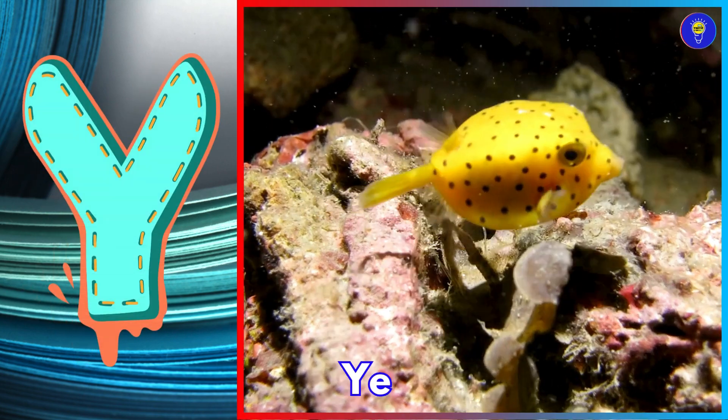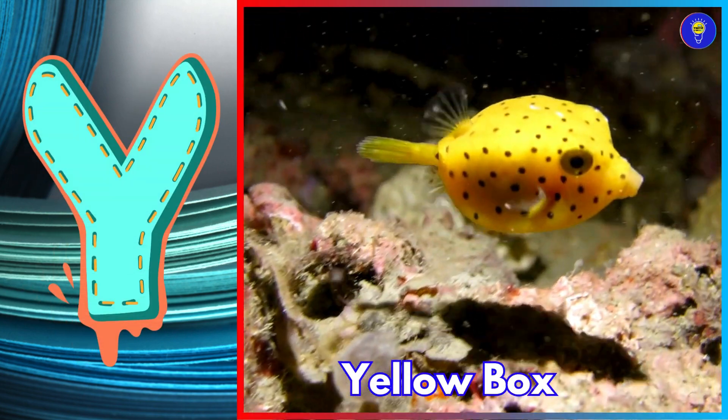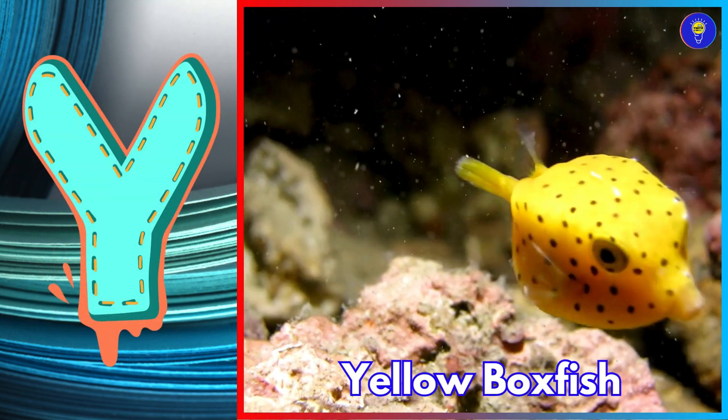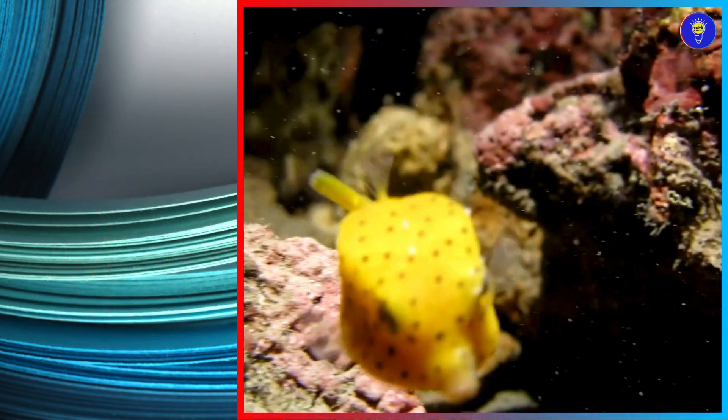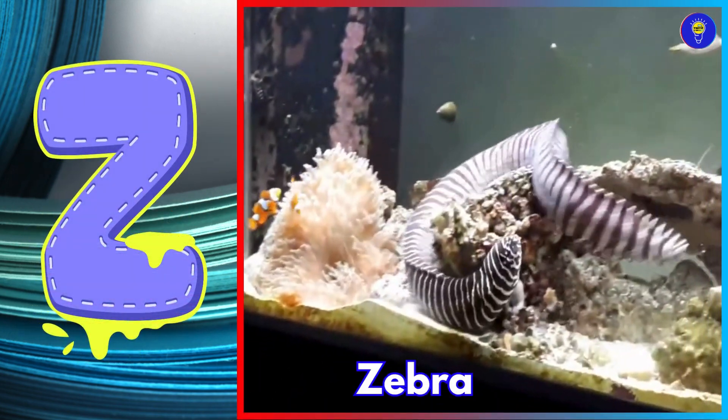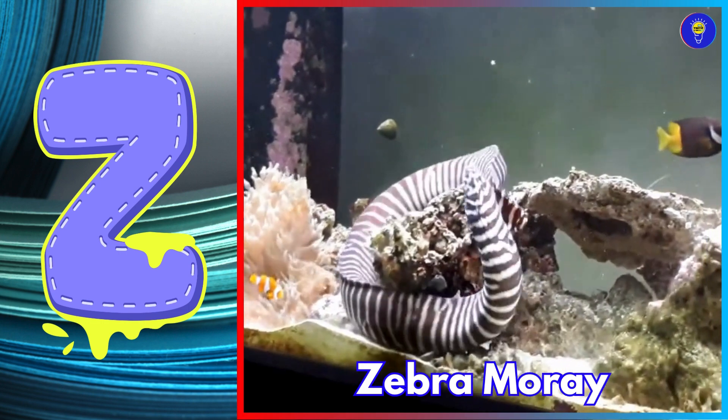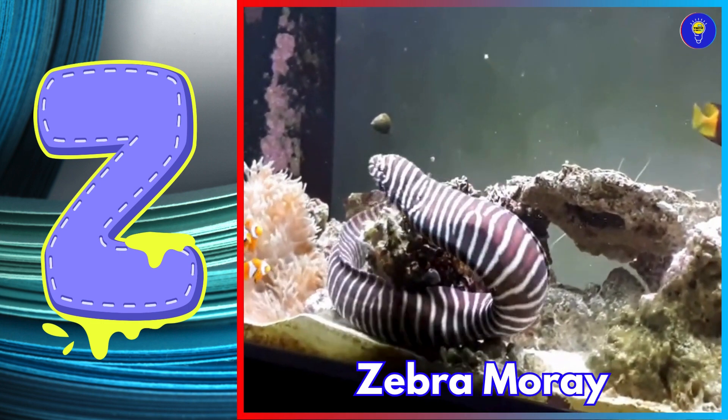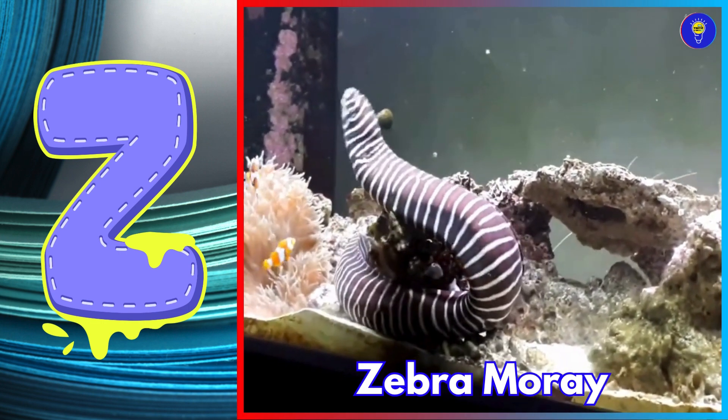Y is for yellow boxfish. Yuh, yellow boxfish. Z is for zebra moray. Z, zebra moray.